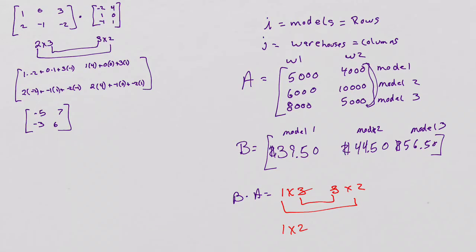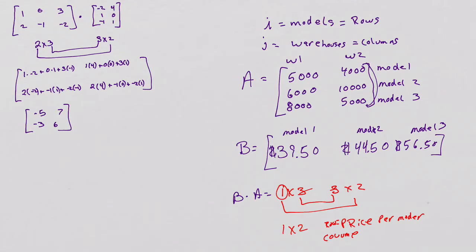Earlier I was talking about the meanings. If we go back and look, in matrix B my rows represent price per model, and my columns will be warehouse 1 and warehouse 2 from the second matrix. So we'll actually be able to get the total price of inventory in each warehouse from these matrices.